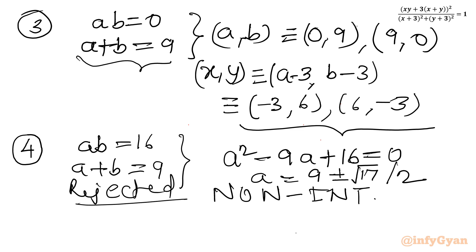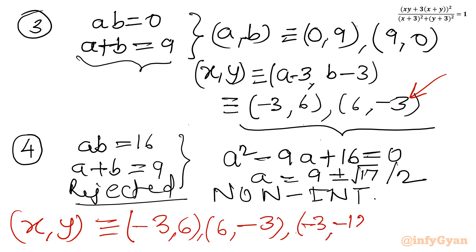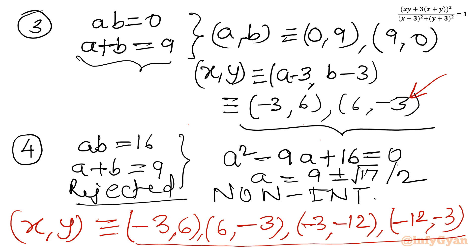So our final answer: the ordered pairs (x, y) are (minus 3, 6), (6, minus 3), (minus 3, minus 12), and (minus 12, minus 3). Overall, 4 ordered pairs are there. I hope friends this video will be meaningful to you. Do not forget to like, share, subscribe. Bye bye till next video, friends. Good luck. Take care of yourself.